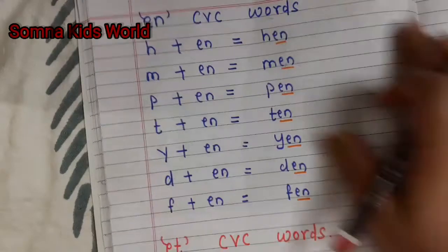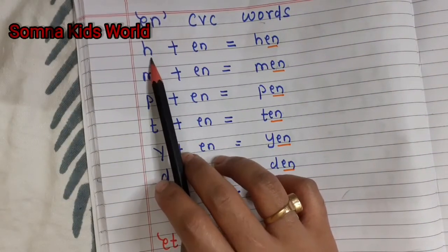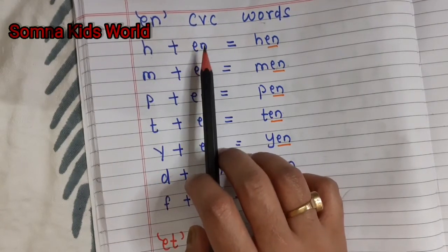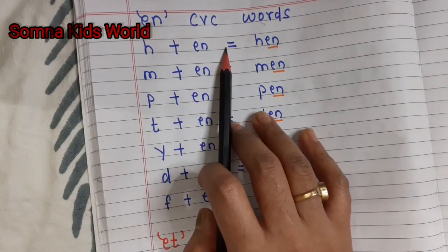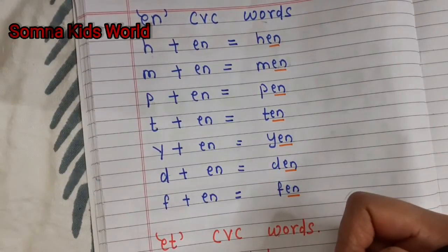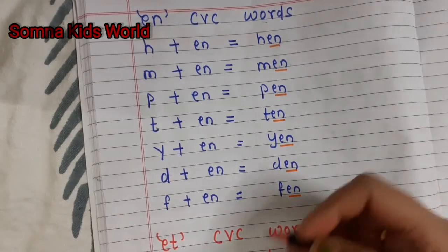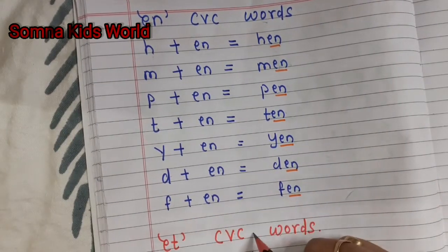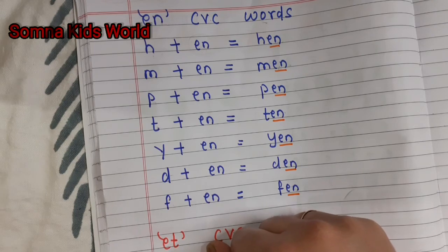Tell your kids to read like this — not to read letter by letter. The first letter should be read with its phonic sound, and then the last two letters are read together at the same time. If they read like this, they can easily read all the words. So this is all about today's e-family words. If you like this video, please give a thumbs up and subscribe to my channel Somna Kids World for more educational videos. Thank you for watching!